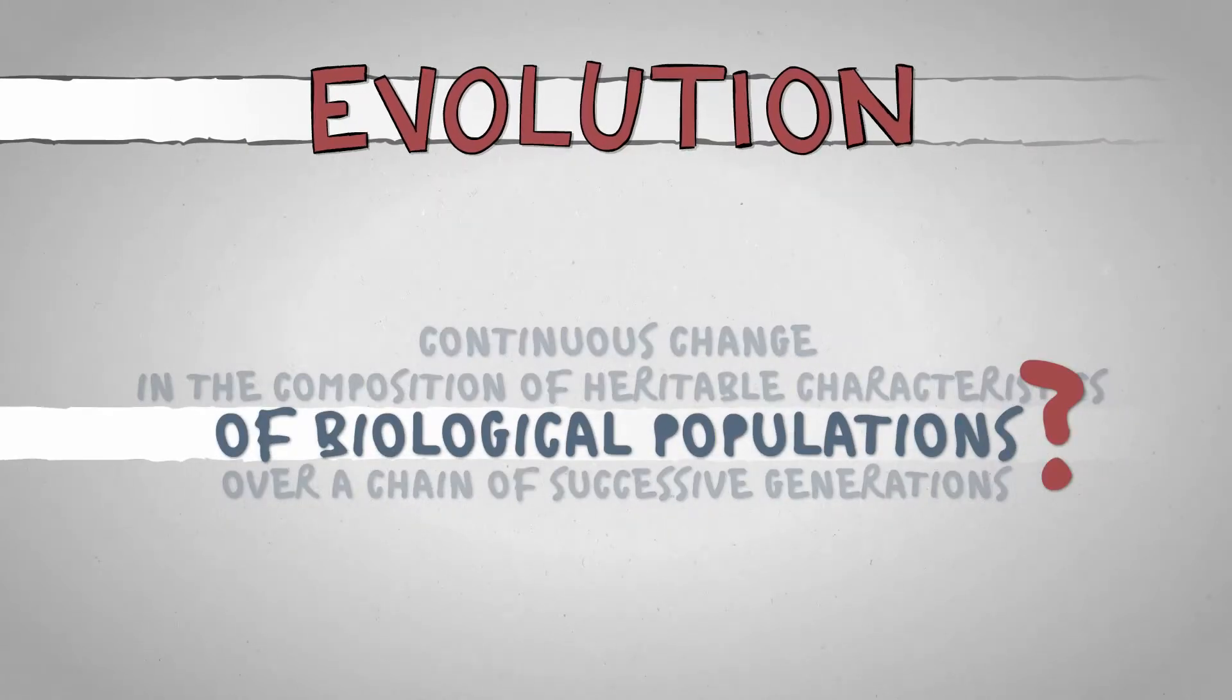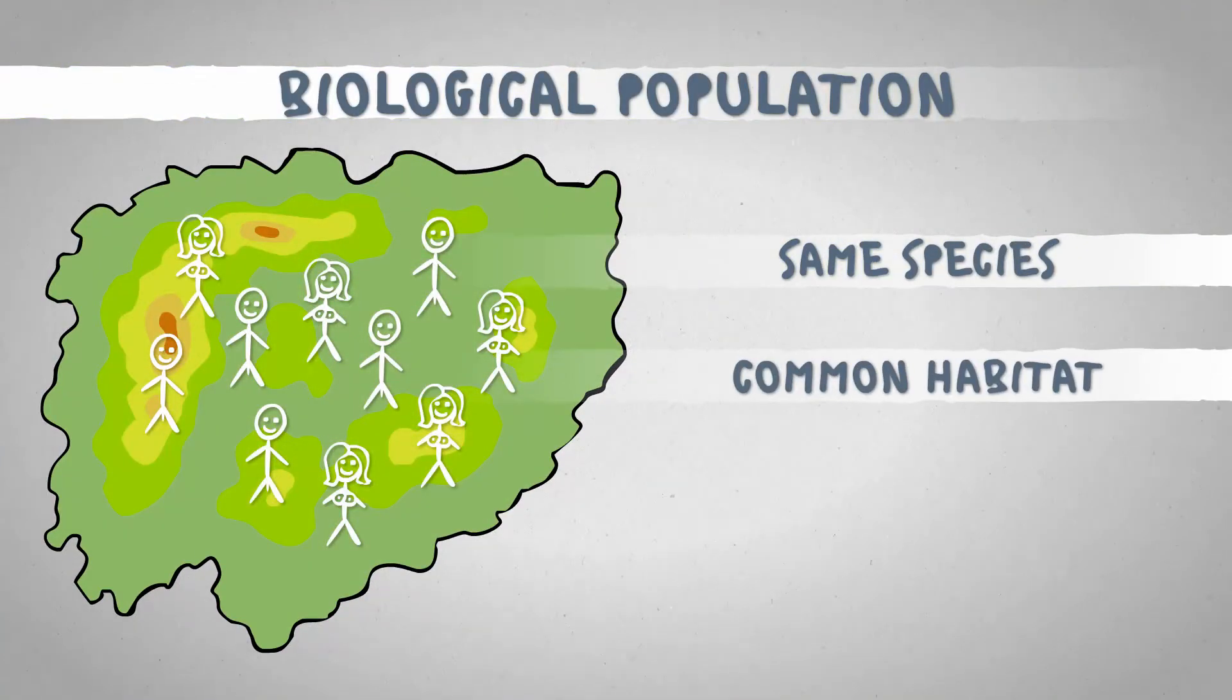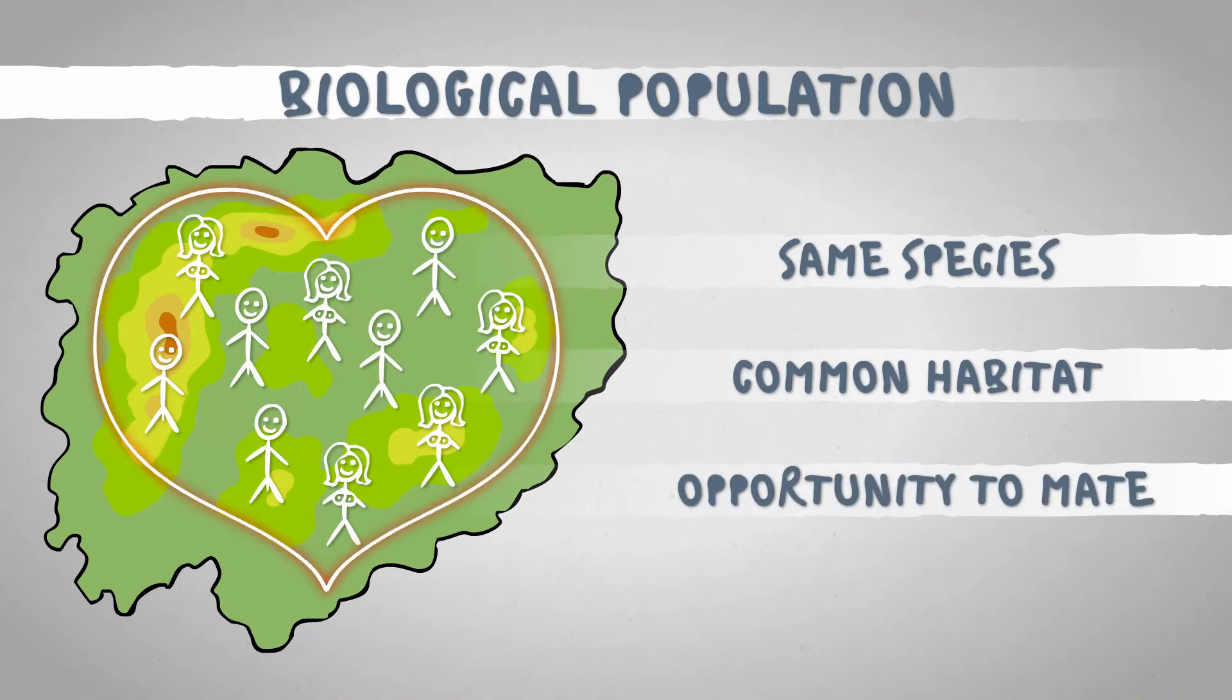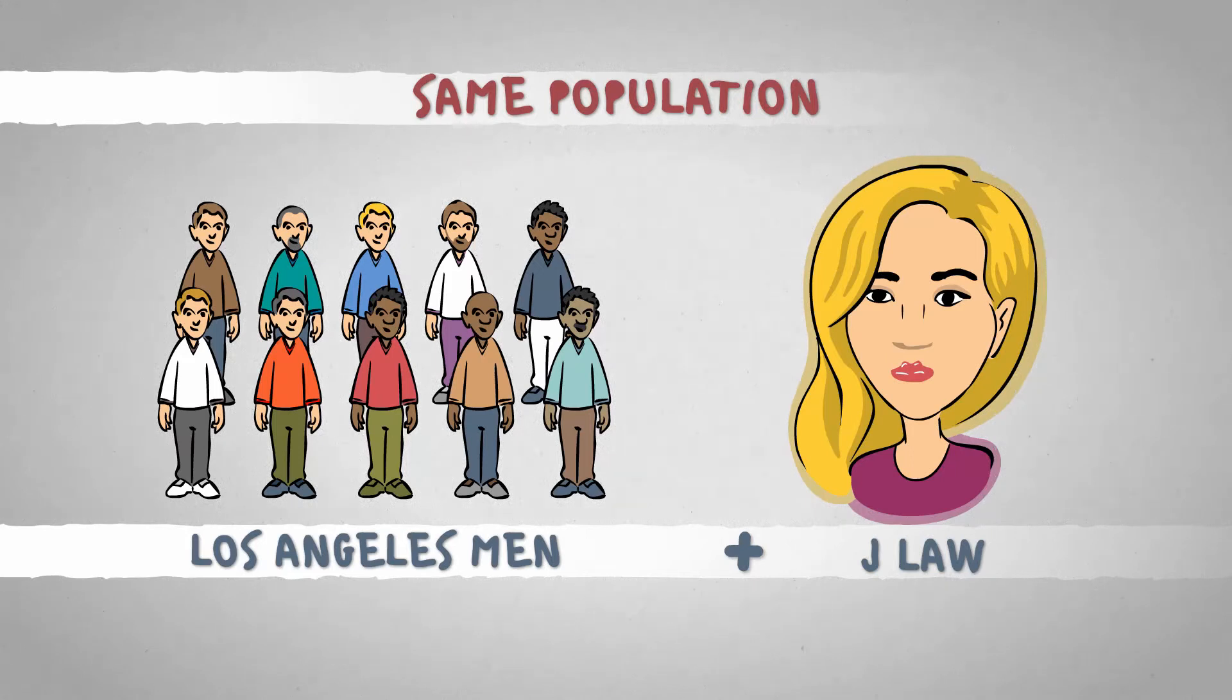What is a biological population? A group of individuals belonging to the same species that live in the same geographical region and have the opportunity to mate with each other is called a population in genetics. The opportunity to mate is quite a broad concept considering that all the men in Los Angeles and Jennifer Lawrence belong to the same population.